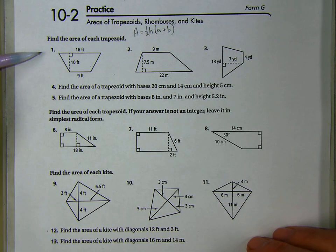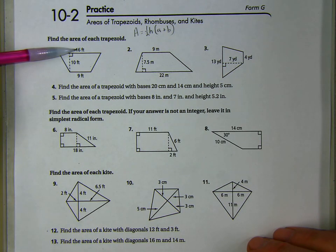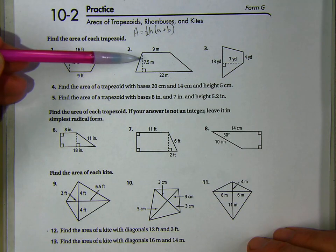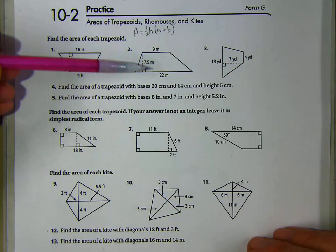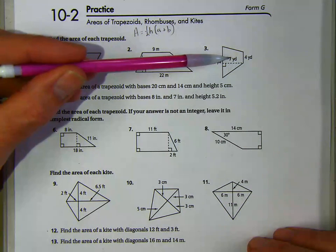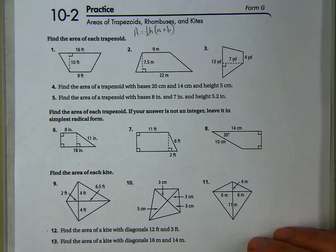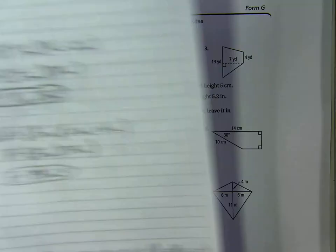So on number 1, 2, and 3 are real simple. The area would be one-half of 10 times 9 plus 16. This would be the area equals one-half of 7.5 times 9 plus 22. And number 3 would be the area equals one-half of 7 times 5.4 plus 13. Of course, I have those worked out and I've given those to you.